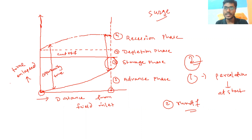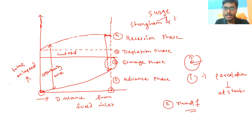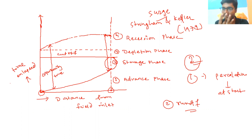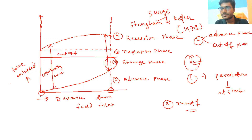Surge irrigation was proposed by Stringham and Keller in 1979. It is a modified method of surface irrigation. In normal surface irrigation there are four different phases, but in surge irrigation there are two phases — the advanced phase and the second phase is the cutoff phase or cutback phase.